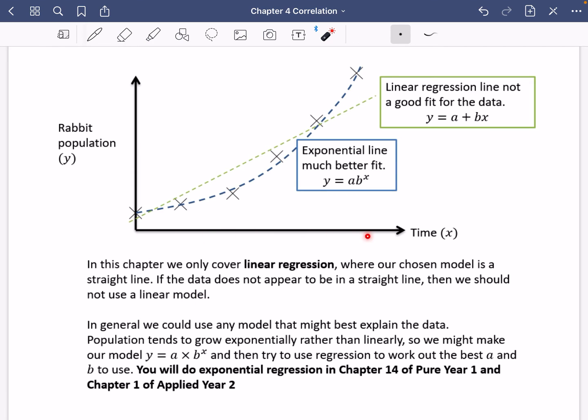For example, if I have time, which is X and rabbit population, which is Y, these are the different data points that we've got here. And what you'll notice is if we try to do a linear regression line, it's not a very good fit for the data. This green line here doesn't really fit where these yellow crosses are. But an exponential line is a much better fit.